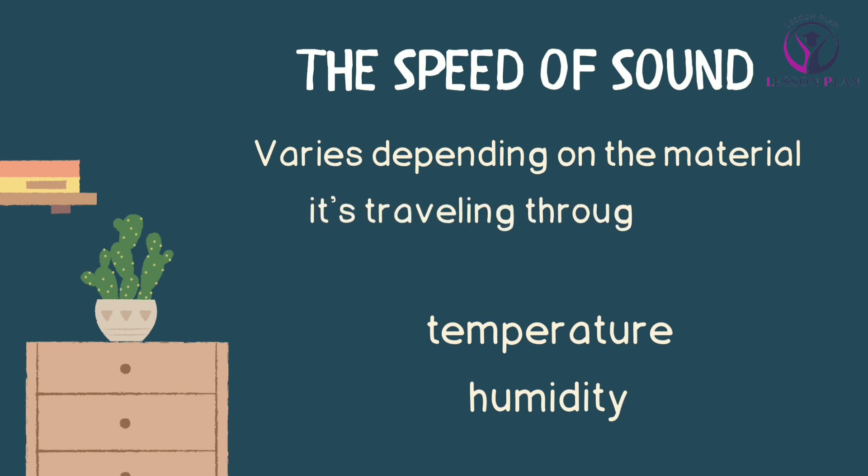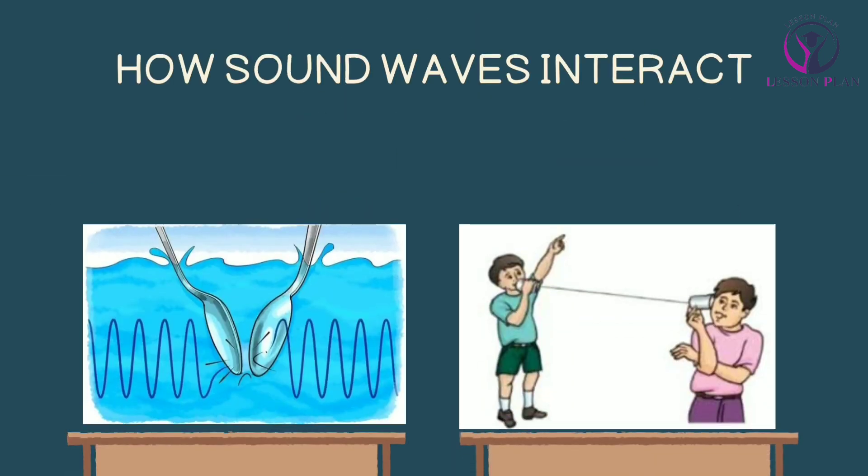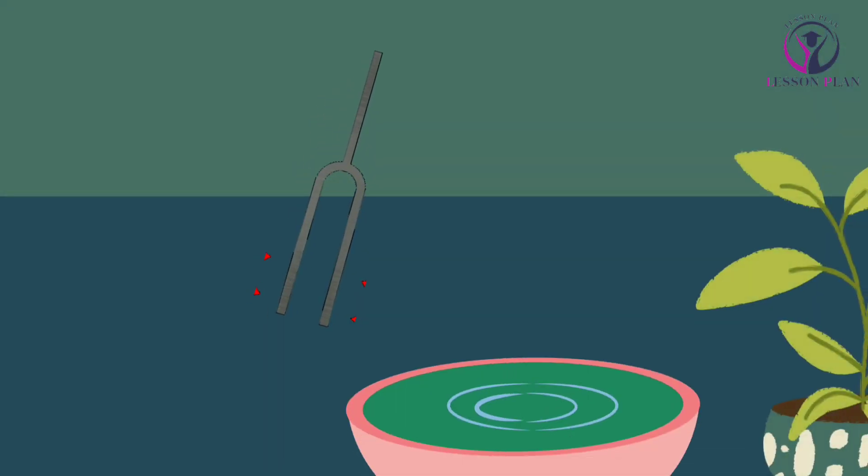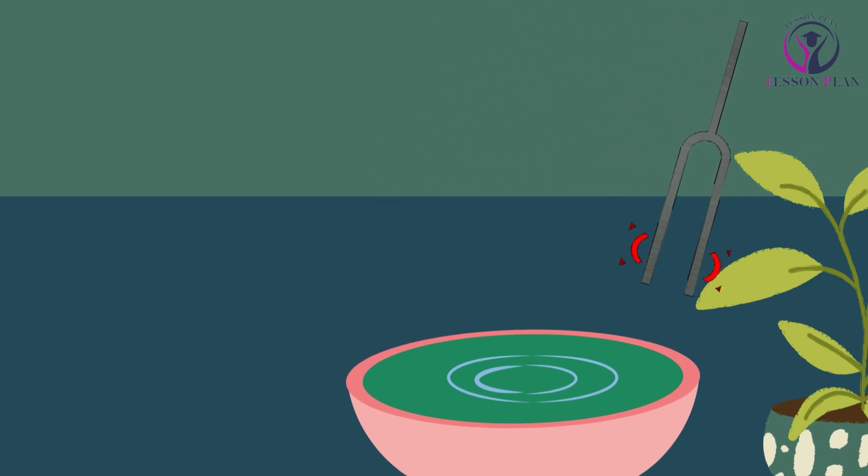The speed of sound also varies depending on the material it's traveling through, as well as other factors such as temperature and humidity. Now let's explore how sound waves interact with different materials.